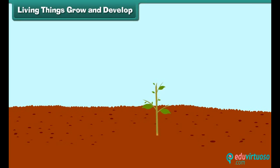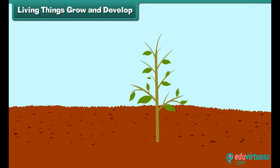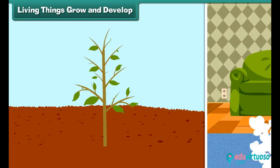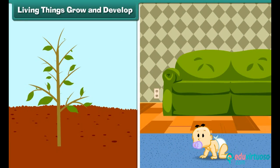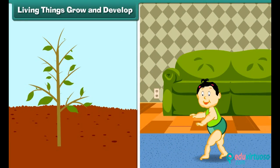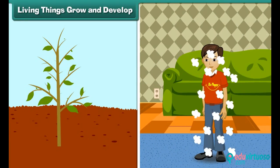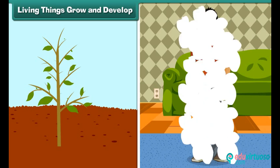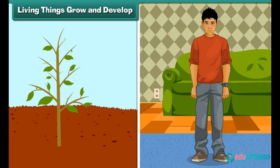Living things grow and develop. All organisms grow and develop — growth results in an increase in size, weight, and synthesis of new protoplasm. In animals, growth is limited to a certain age, while plants grow throughout their entire life.